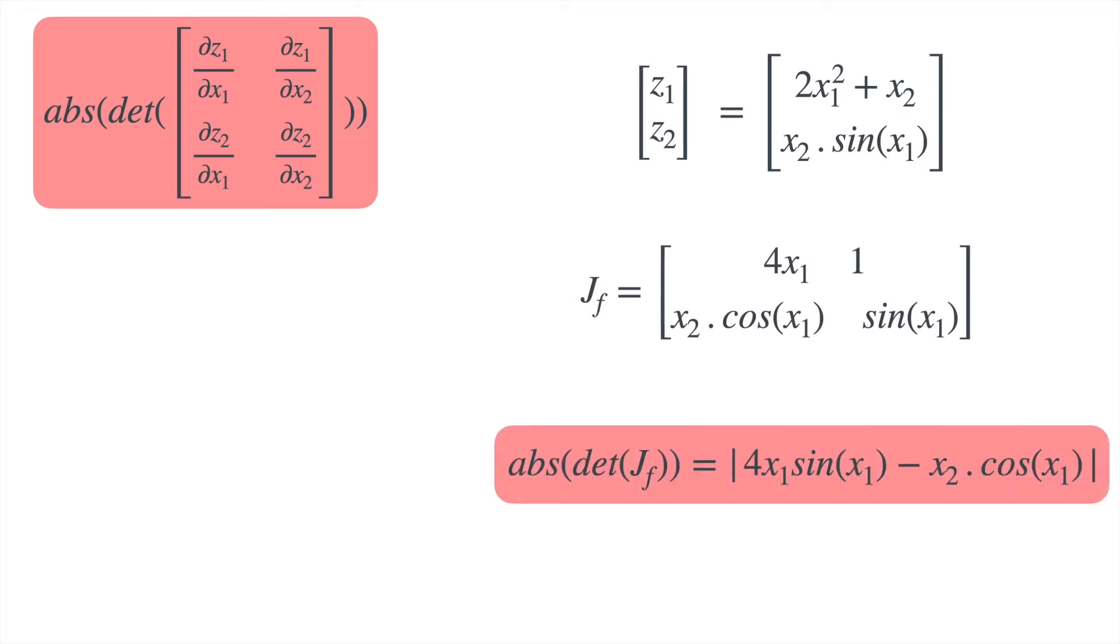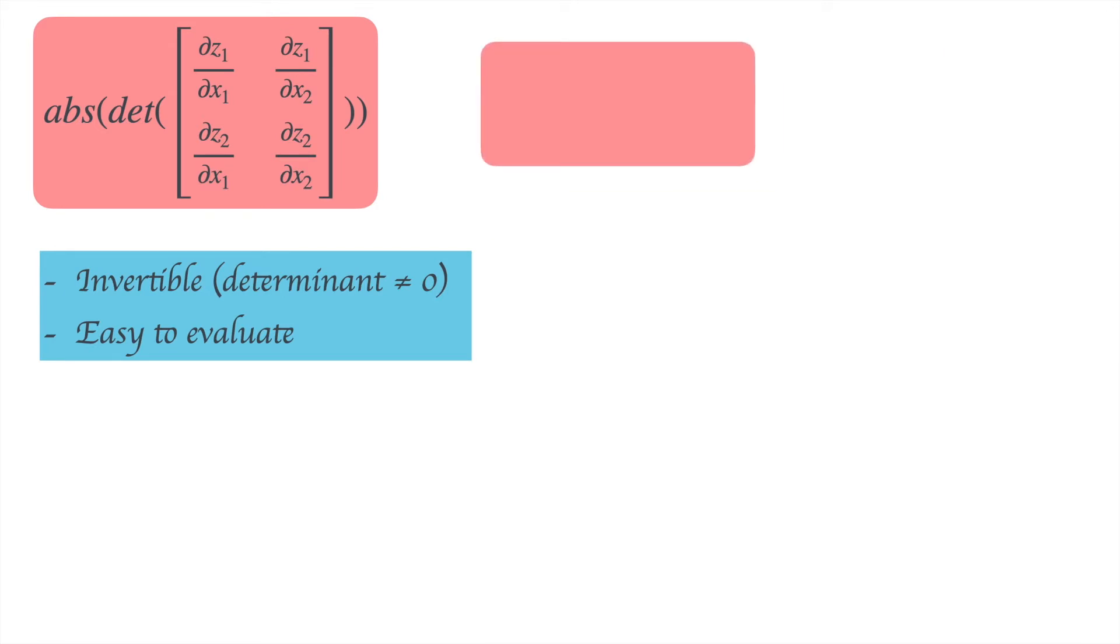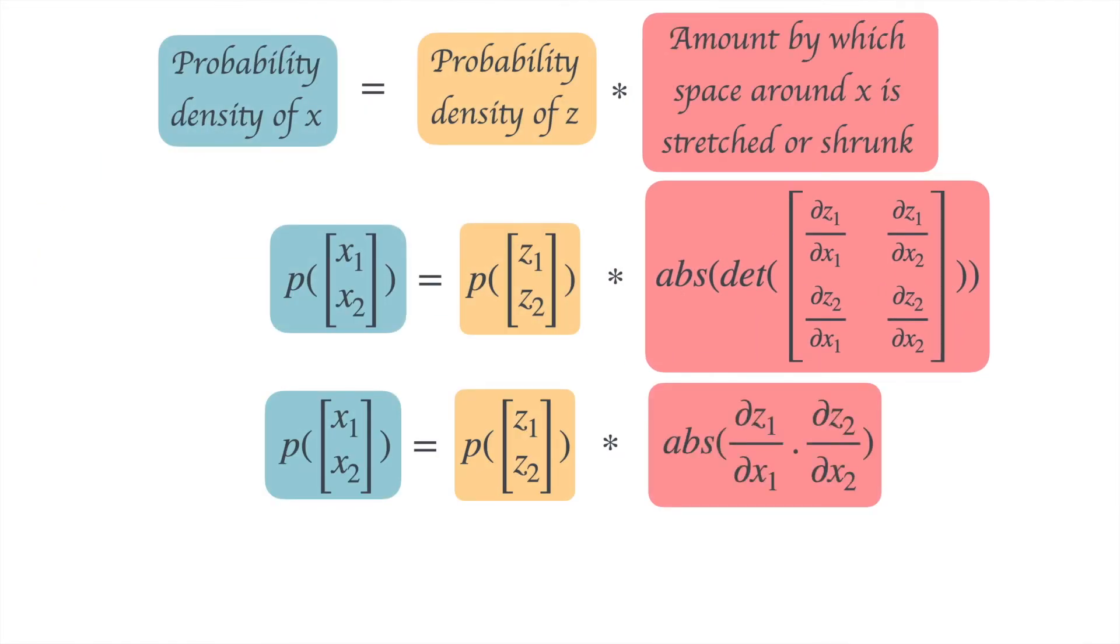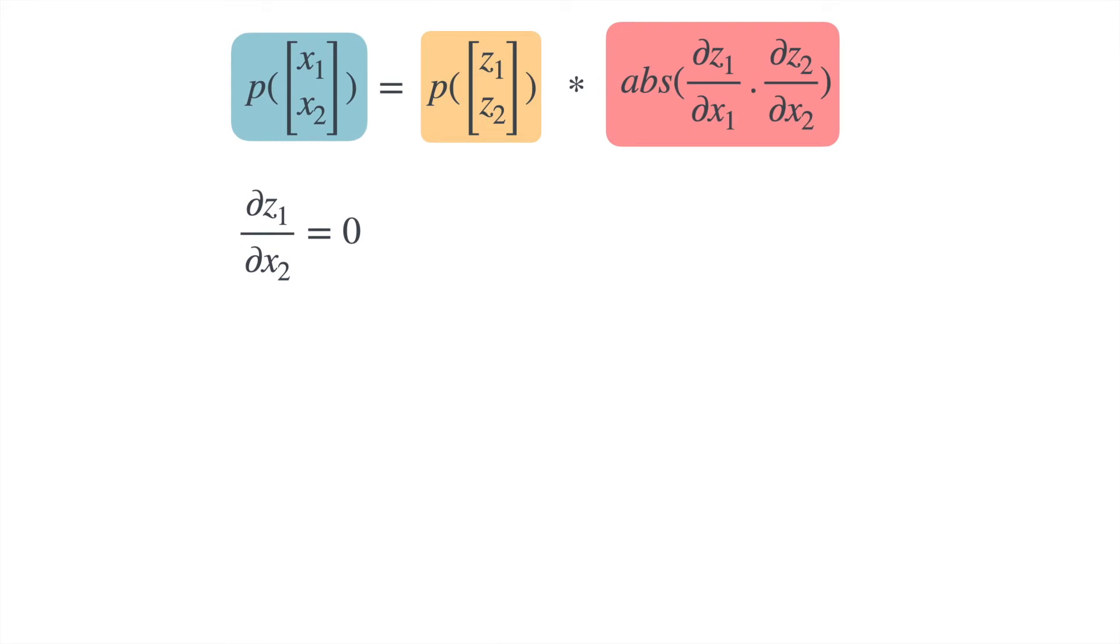When we select a function f, we would like to have it such that the determinant is not zero, which means the function is invertible and it should be easy to evaluate. If one of these terms, for instance dz1 by dx2, is equal to zero, then this determinant becomes equal to the product of its diagonal values. In which case, the relationship becomes p(x1, x2) equals p(z1, z2) times the absolute value of the diagonal entries.